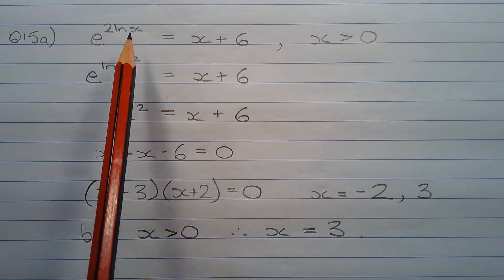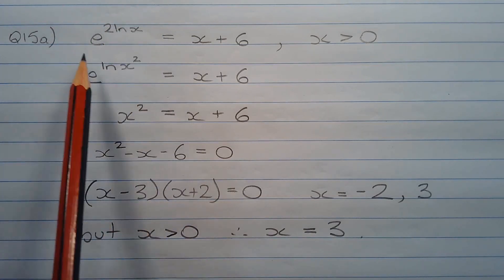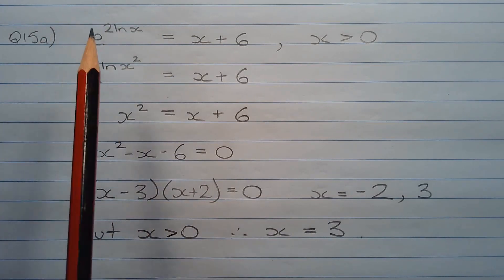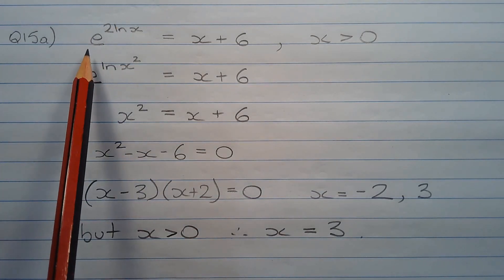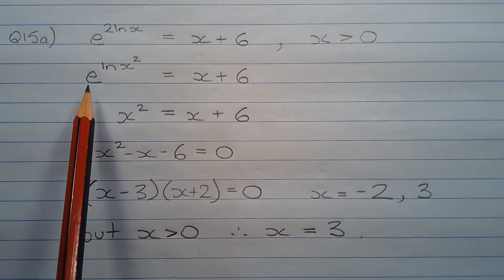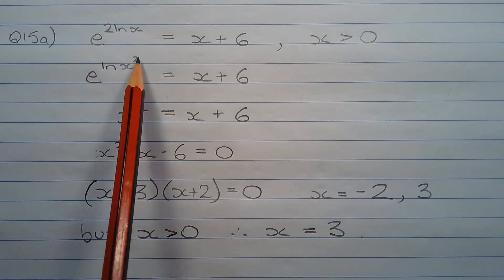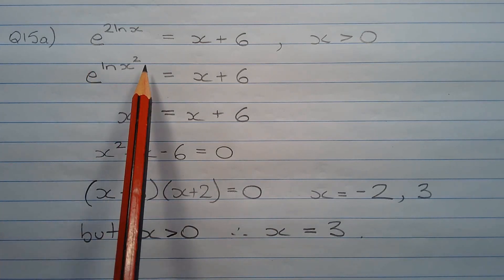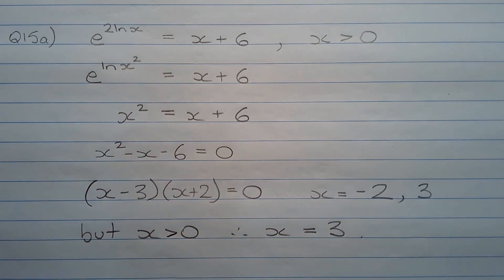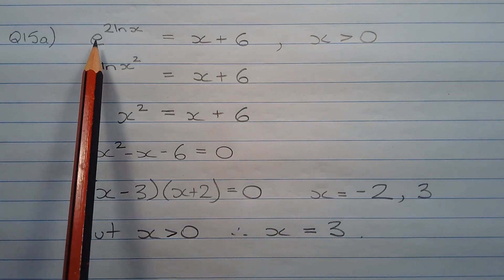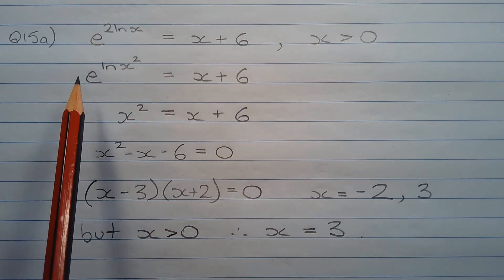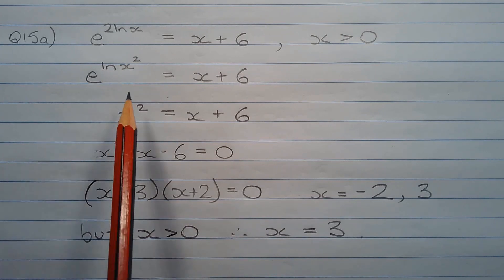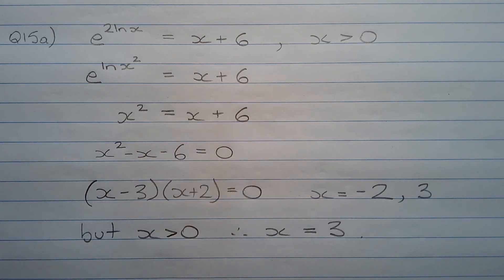The next step is to change the form of the left-hand side in such a way that we can eliminate the e and the ln, since they are inverse operations. So e to the power of 2 ln(x) can be written as e to the power of ln of x squared, by application of one of the logarithm laws. So the equation becomes e to the power of ln of x squared equals x plus 6.